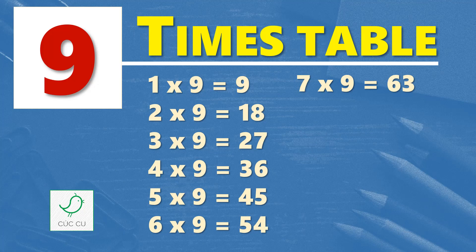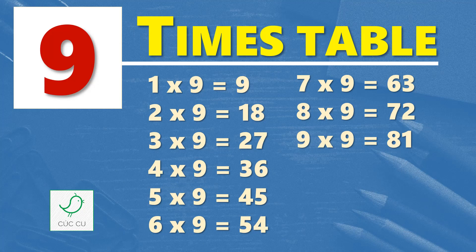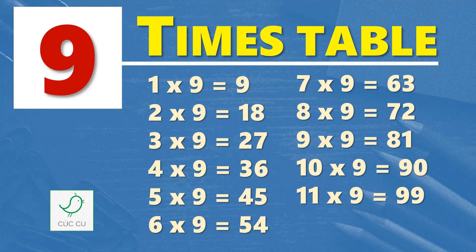7 times 9 is 63, 8 times 9 is 72, 9 times 9 is 81, 10 times 9 is 90, 11 times 9 is 99, 12 times 9 is 108.